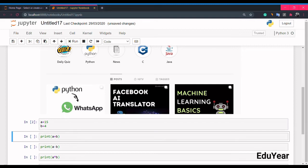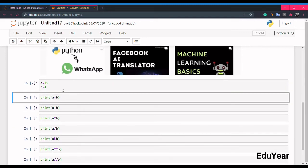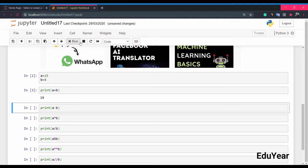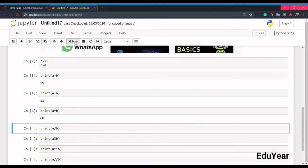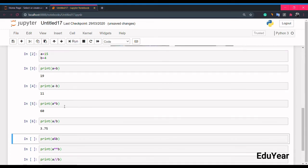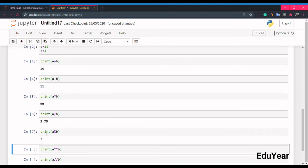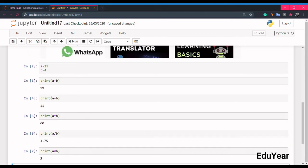So we have two values: a equals 15 and b equals 4. a plus b equals 19, a minus b equals 11, a multiply b equals 60, a divide b equals 3.75, a modulus b equals 3 (that is remainder), a exponent b...